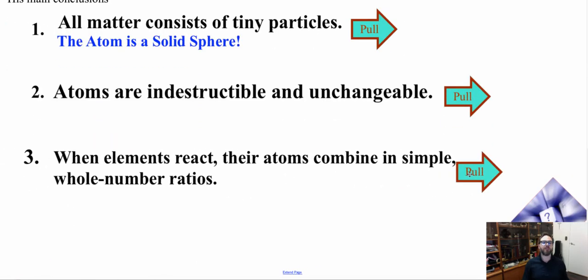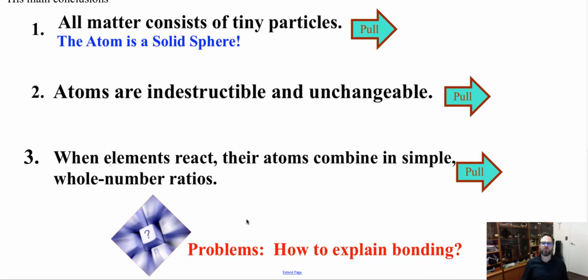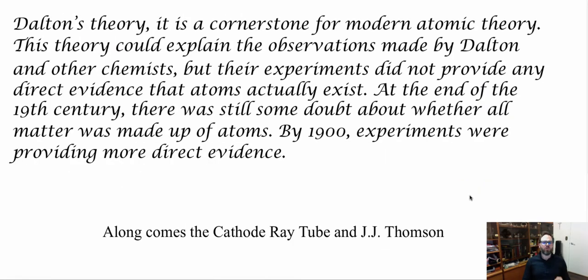Third, Dalton said that when elements react, their atoms combine in simple whole number ratios. However, there was still a problem with Dalton's theories: how do you explain bonding? Dalton's atomic theory became a cornerstone for modern atomic theory. It could explain observations made by Dalton and other chemists, but their experiments did not provide any direct evidence that atoms actually existed. At the end of the 19th century there was still some doubt about whether all matter was made up of atoms.